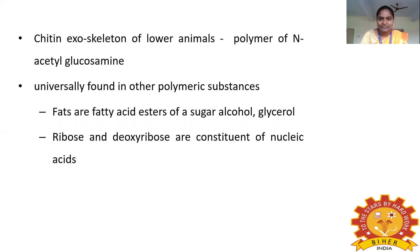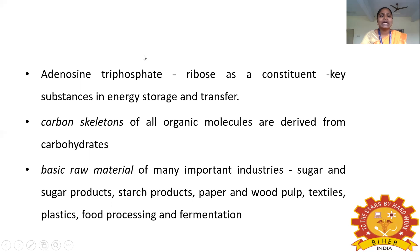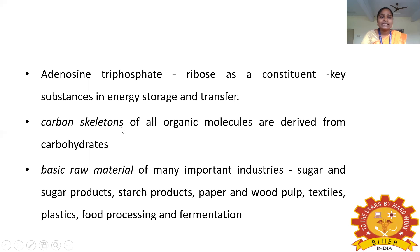Fats, or fatty acids, are esters of sugar alcohol and glycerol. Adenosine triphosphate (ATP) contains ribose as a constituent — ribose is a key carbohydrate substance, and ATP is a key substance in energy storage and transfer. The carbon skeletons of all organic molecules are derived from carbohydrates.